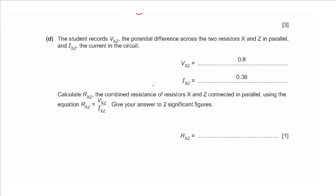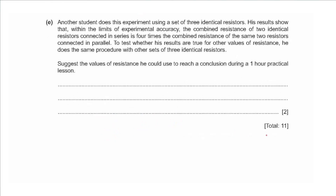Part d: the student records Vxz = 0.8 V and Ixz = 0.36 A across the parallel combination. Calculating Rxz = Vxz / Ixz = 0.8 / 0.36 ≈ 2.2 Ω (to 2 significant figures).